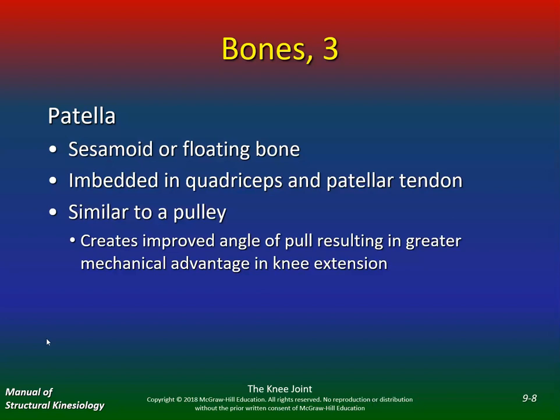So the patella — it's a sesamoid or floating bone embedded in the quadriceps and patellar tendon, similar to a pulley. It creates an improved angle of pull, resulting in greater mechanical advantage. The patella is very important — it gives you a mechanical advantage in knee extension.